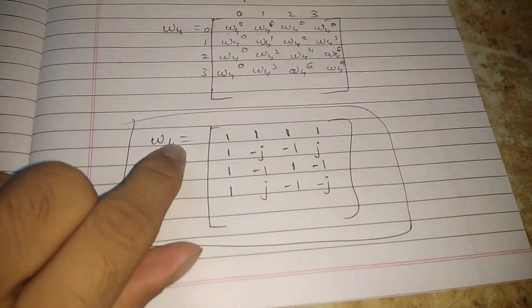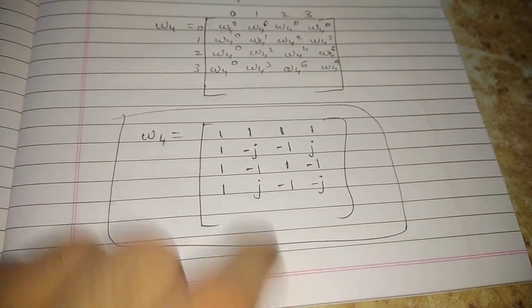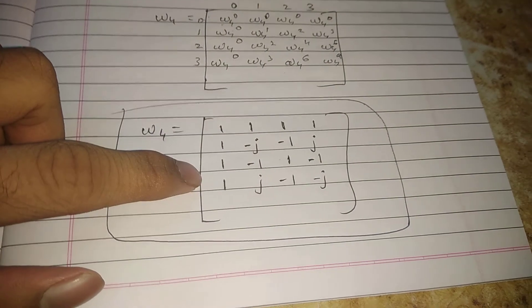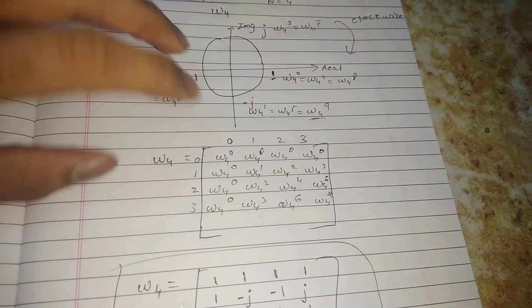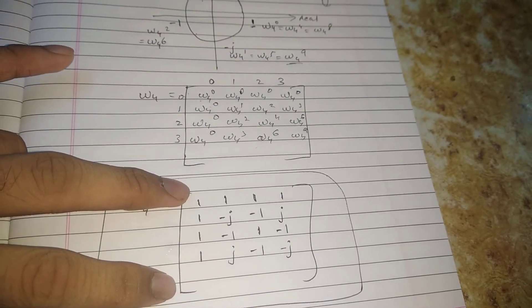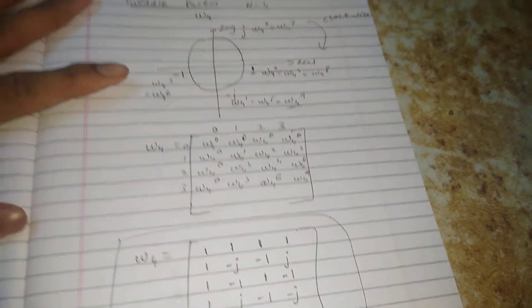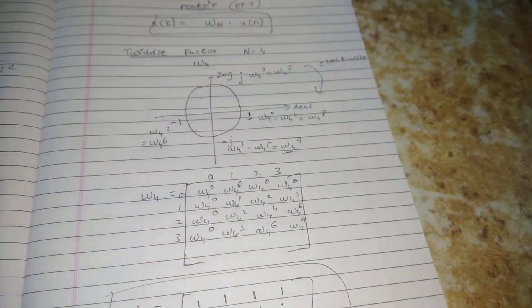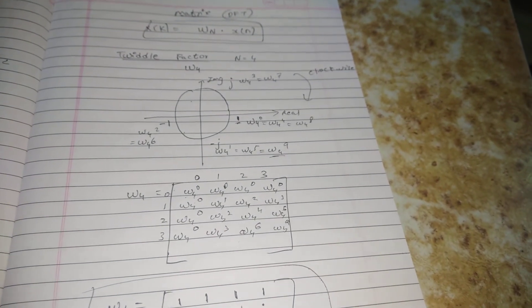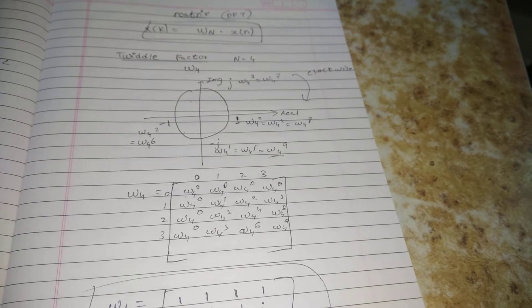This is the complete W4 twiddle factor matrix. In the next video, we will discuss W6, that is the 6-point twiddle factor.